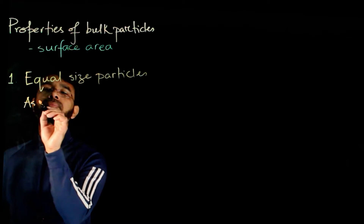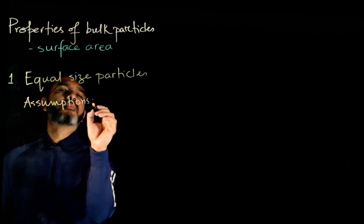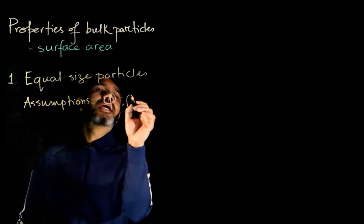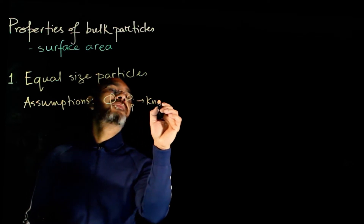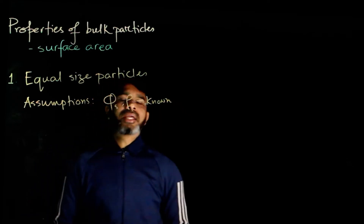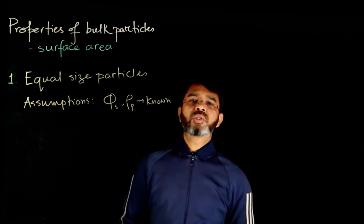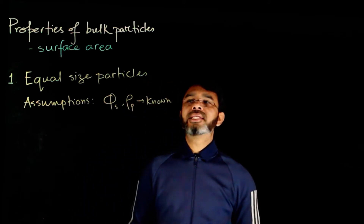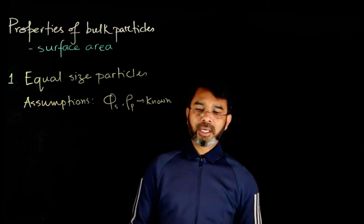Just to list the assumptions: we have the sphericity and the density — these are known. The use of sphericity is to estimate other properties, and this is one use of the concept of sphericity to estimate the properties of bulk particles.